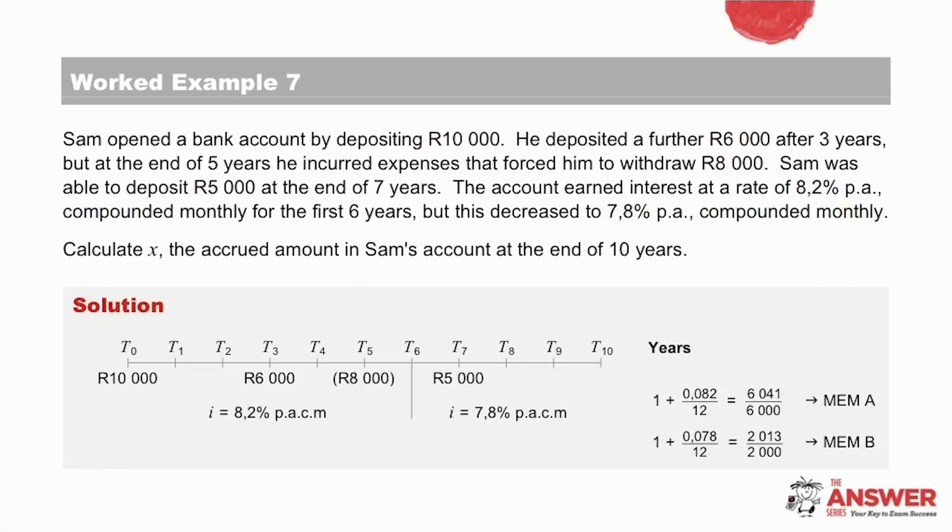Let's have a look here at the first part of the solution, creating the timeline. Check that your amounts are in the correct places along the time period, and that most importantly, you have distinguished the withdrawal of 8,000 rand from the deposits. And then that the interest rates for the different time periods have been added in with a clear vertical line indicating where the interest rate changes.